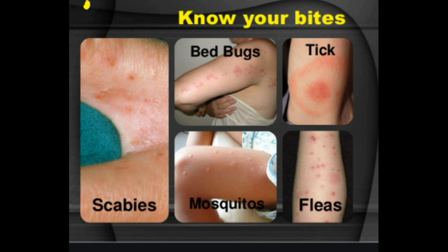Scabies mites can live on a person for up to two months, but once off a person, they typically die within three to four days. If you're treating scabies, expect itching and burning from the rash to last for several weeks after treatment begins, because the eggs and mite waste remain in your skin even if the mites are dead. Until your skin grows new layers, you may still experience a rash and irritation.